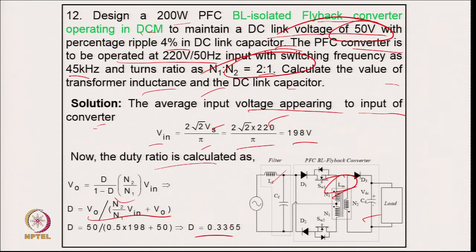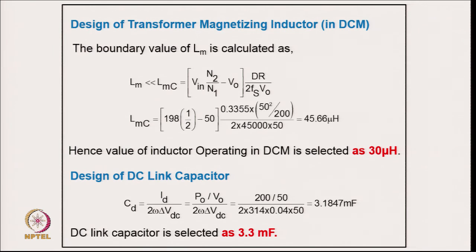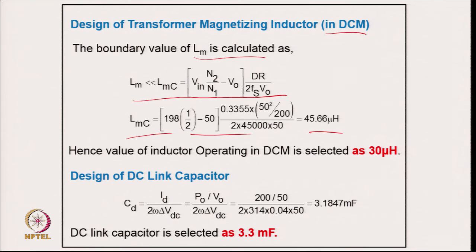Coming to the magnetizing inductance design in DCM: the critical boundary condition allows ripple of twice the current through the magnetizing inductance, giving 45.66 μH. To ensure operation always in DCM, 30 μH is selected. For the output DC link capacitor: C_d = I_d / (2 × ω × ΔV_dc); with 4 percent ripple and the load current from the 200 W specification, the value is 3.1847 mF. The DC link capacitor is selected at 3.3 mF. Example 13 introduces the design of a 300 W bridgeless isolated Cuk converter in discontinuous mode to maintain 100 V DC link with 4 percent ripple, 20 percent permitted ripple in input inductor and intermediate capacitor.